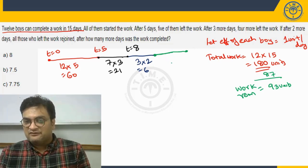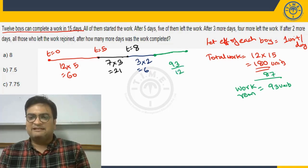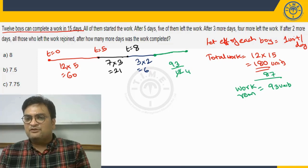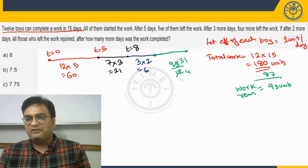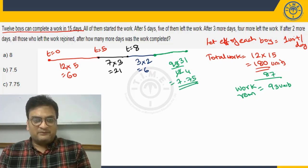So for doing ninety-three units of work, combined efficiency is twelve, the time will be ninety-three by twelve. When you solve it, three goes four times, three goes thirty-one times. So thirty-one by four is nothing but seven point seven five days. So the answer is going to be seven point seven five which is option choice C.